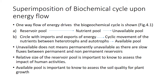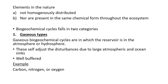For example, agronomists routinely measure the fertility of the soil by estimating the concentration of exchangeable nutrients — that is usually a small part of the total soil nutrient content that is quickly available to plants. Elements in nature are not homogeneously distributed nor present in the same chemical form throughout the ecosystem. Biogeochemical cycles fall into two categories: gaseous types and sedimentary types.